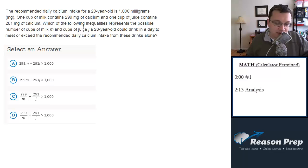how many mg of calcium will they drink and is that over 1,000? So M is the cups of milk, and each cup of milk is going to provide you with 299 mg of calcium. So the number of mg of calcium from the milk is going to be 299 times M, 299 mg per cup. So if you have M cups you just multiply them. This is going to be mg of calcium.